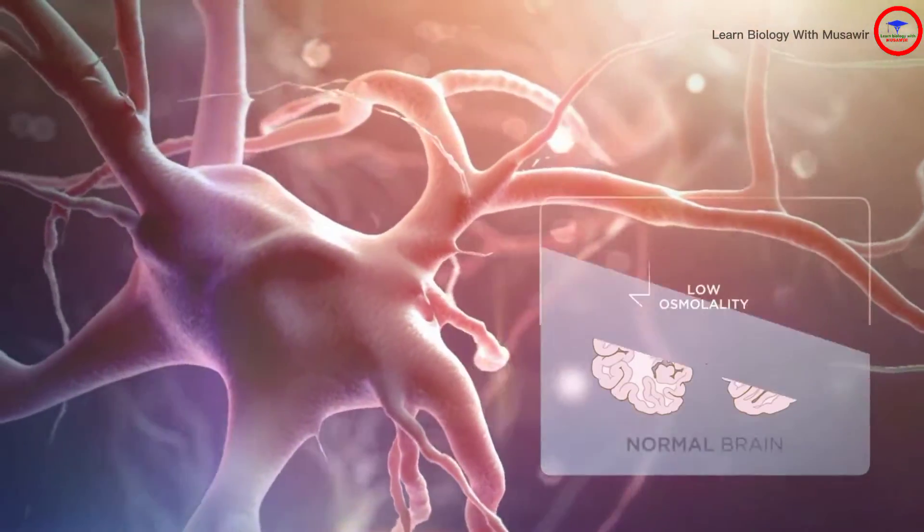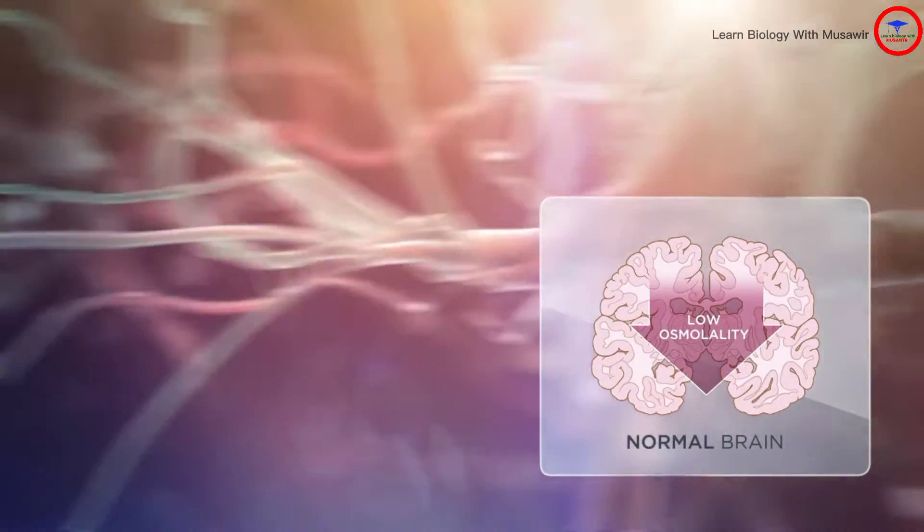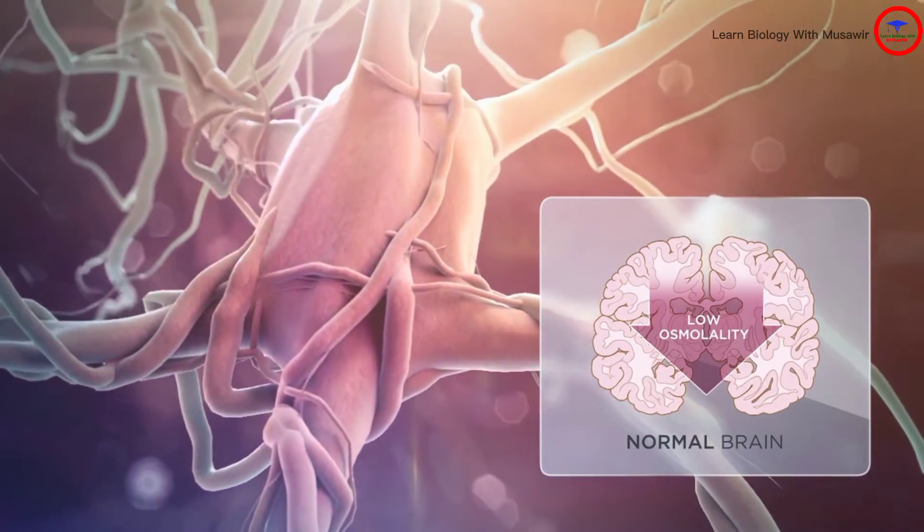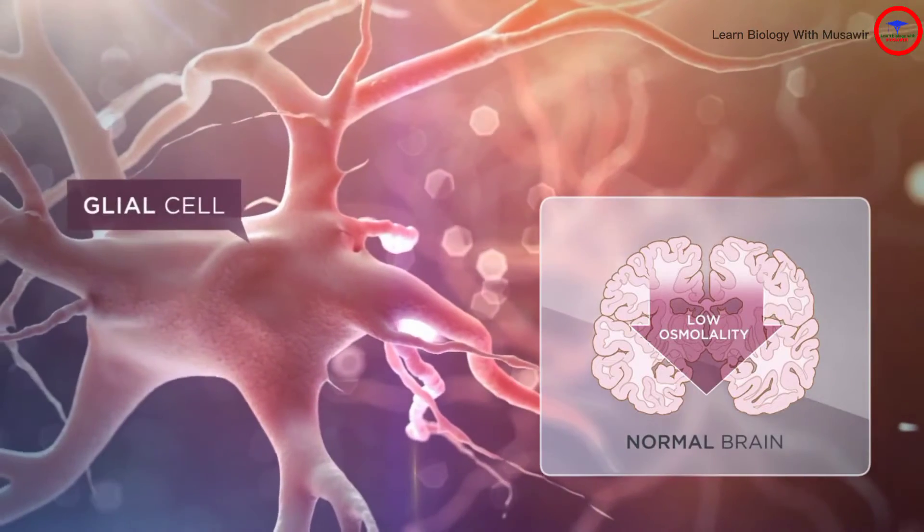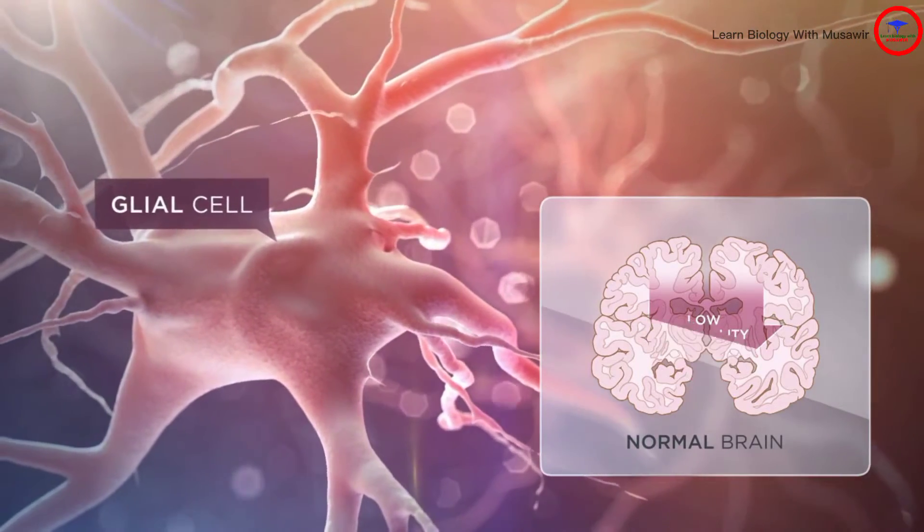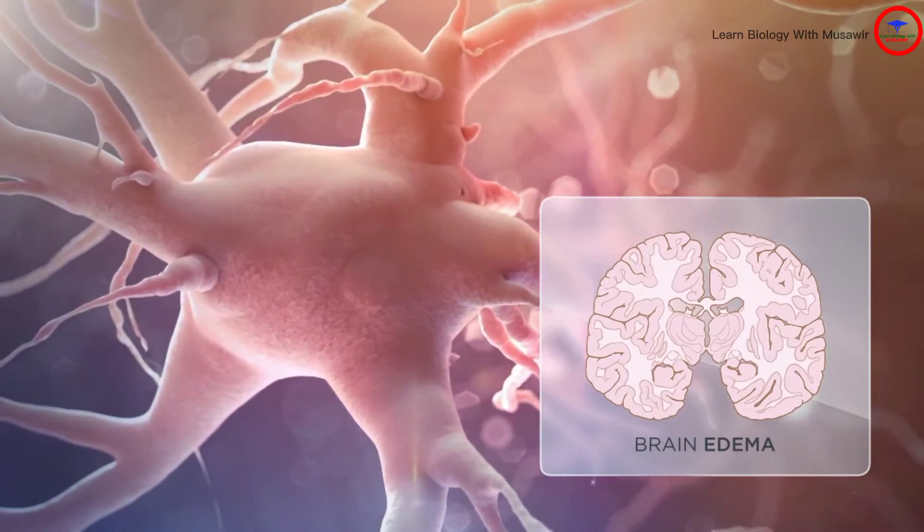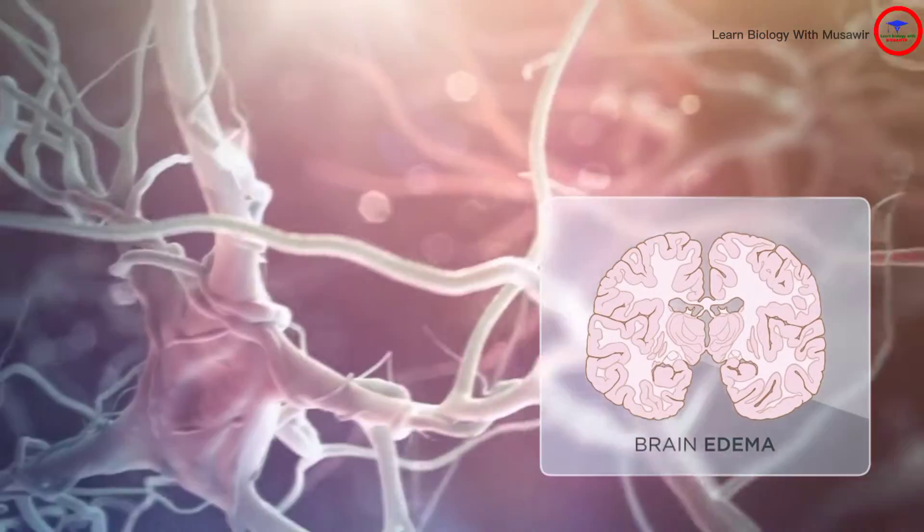Acutely, low osmolality causes water in the brain to move from extracellular areas with low solute content into cells with relatively high solute content. Glial cells selectively swell after hypotonic stress, and neurons do not, suggesting the existence of glia-specific water pores.